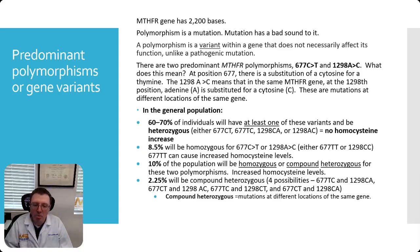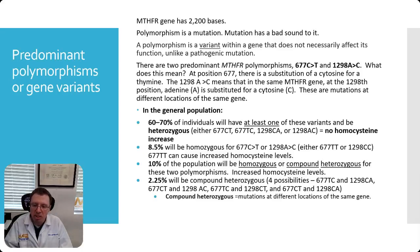It will increase homocysteine levels in both cases — if you're homozygous for 677TT or compound heterozygous for each of the two mutations, meaning you have both of them in their heterozygous form. About 2.25% would have the compound heterozygous, meaning the 677 one gene and the 1298 one gene — both being heterozygous, not homozygous.